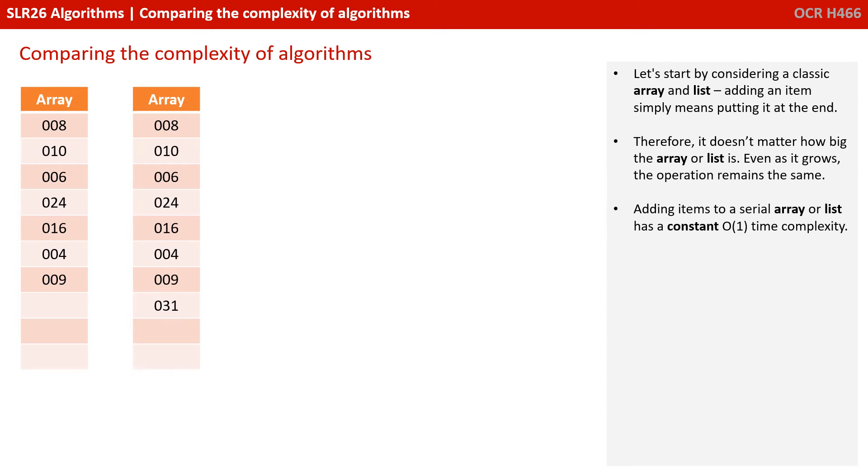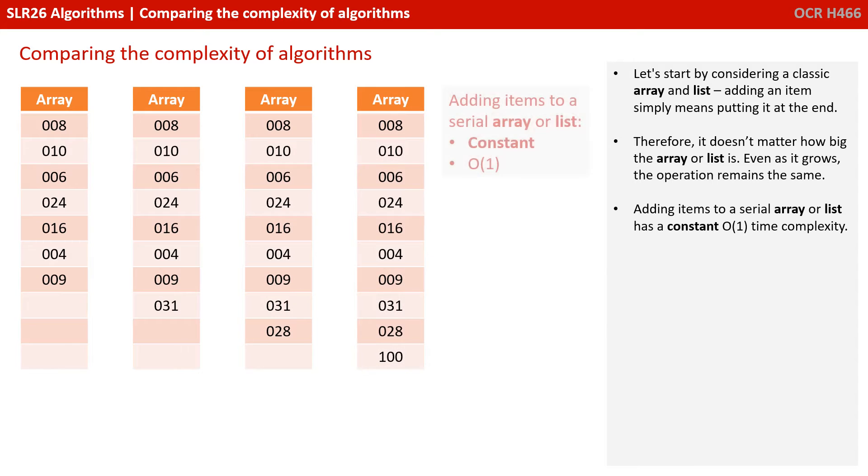Let's start by considering a classic array or list. Adding an item simply means putting it at the end. Therefore it doesn't matter how big the array or list is. Even as it grows the operation remains the same. Adding items to a serial array or list therefore has a constant O(1) time complexity.